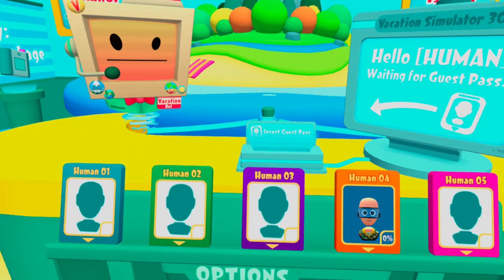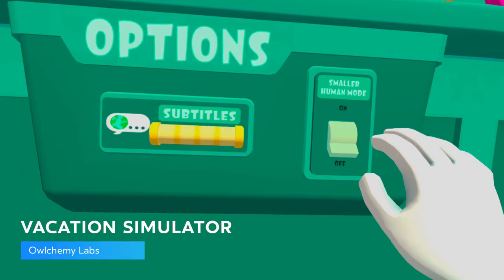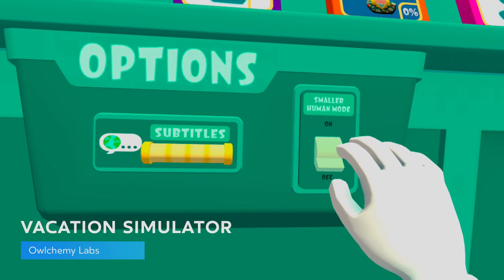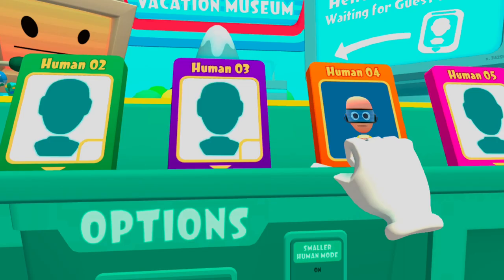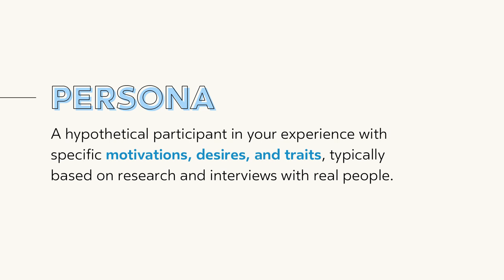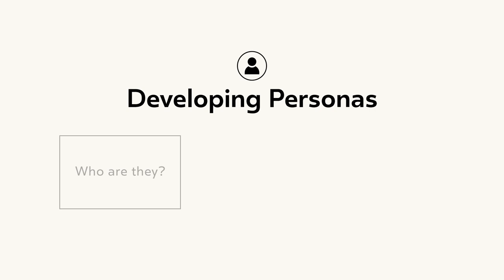Rather than treating inclusion as a feature or an add-on, center your experience design around it from the beginning, and on an ongoing basis afterwards. As you imagine mechanics and begin testing to find the fun for neurotypical and able-bodied people, consider in equal measure ways for those with different needs to engage in the experiences you design. For some, creating a persona can be helpful for maintaining an inclusive approach throughout the design process. A persona is a hypothetical participant in your experience with specific motivations, desires, and traits, typically based on research and interviews with real people — in other words, who are they, how will they experience your app, and why are they playing?